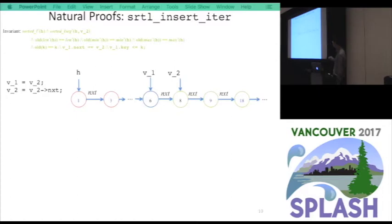If we pick a heap that satisfies the invariant, we can simulate the execution of the loop body. V1 equals V2, so we update V1. And then we update V2 to the next node in the list. So we get a new heap, which is still satisfying the invariant. So we can show that this is an invariant. But this is a particular case. How do we argue that it's true for arbitrary heap satisfying the invariant?